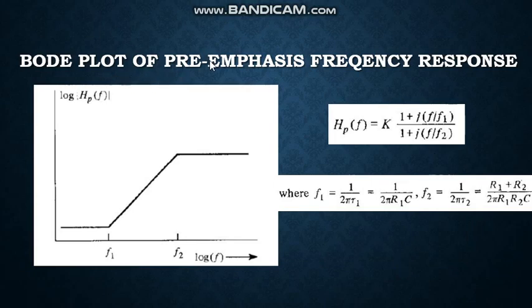This is the Bode plot of the pre-emphasis frequency response. In the Bode plot, there are two cutoff frequencies F1 and F2. Till 0 to F1 the response is flattened, from F1 to F2 it is increasing, and after F2 the response is flattened. The transfer function H_PE(f) = K(1 + jf/F1) / (1 + jf/F2), where F1 = 1/(2πR1C) and F2 = 1/(2πR2') = (R1 + R2)/(2πR1R2C).